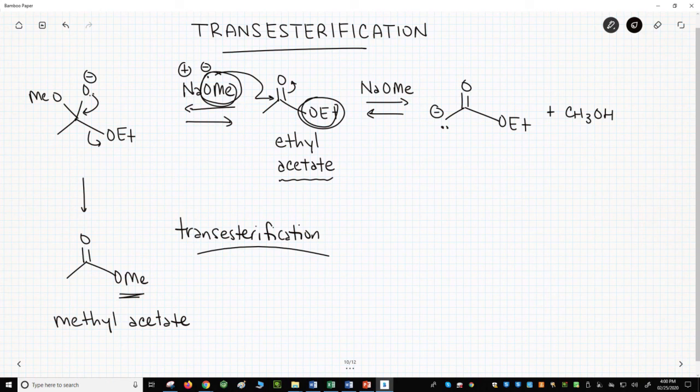If we instead used ethoxide, then we'd be okay. Note that using ethoxide does not prevent exchange of the alkoxy group. Ethoxide is still a nucleophile. It will attack the carbonyl. The difference is that the exchange reaction does not change the structure of the starting material. We replace an ethyl group with another ethyl group.